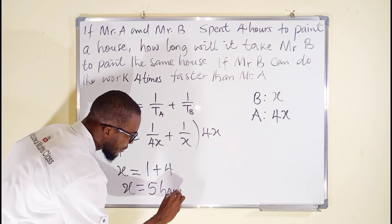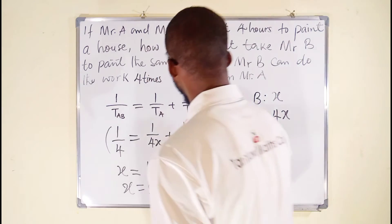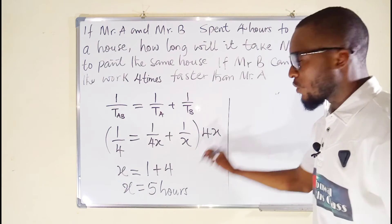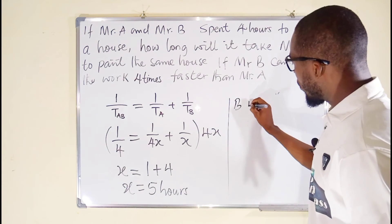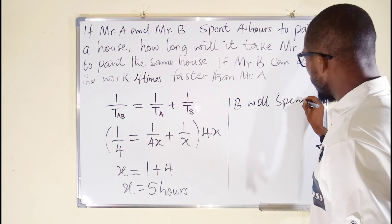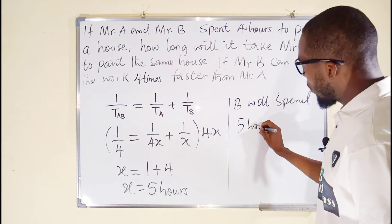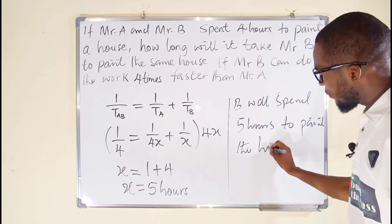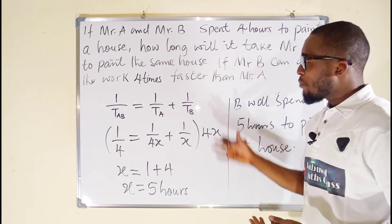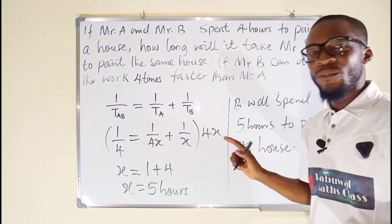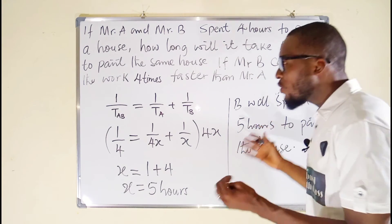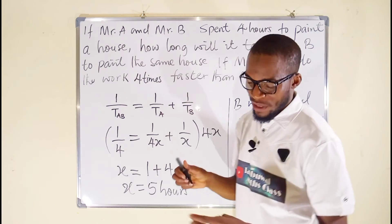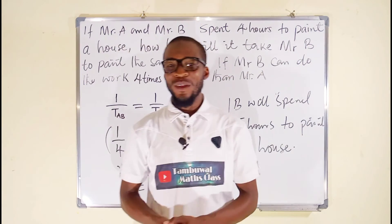So if Mr. B should work alone to paint this particular house, Mr. B will spend 5 hours to paint the house. What about Mr. A? Mr. A will spend 4x this time, which is going to be 20 hours. But if they work together to share the force, they will spend 4 hours to paint this particular house. And this is all I have for you today. Thank you for watching, do have a nice day.